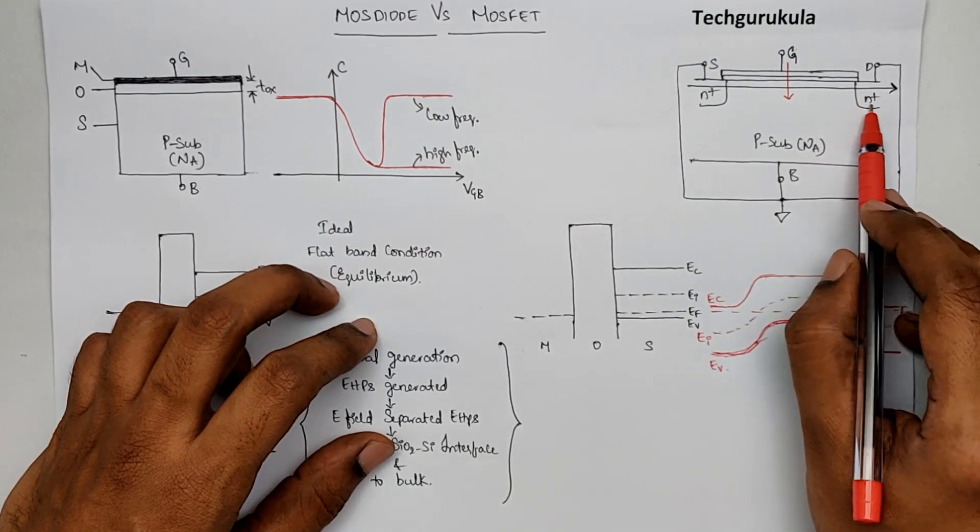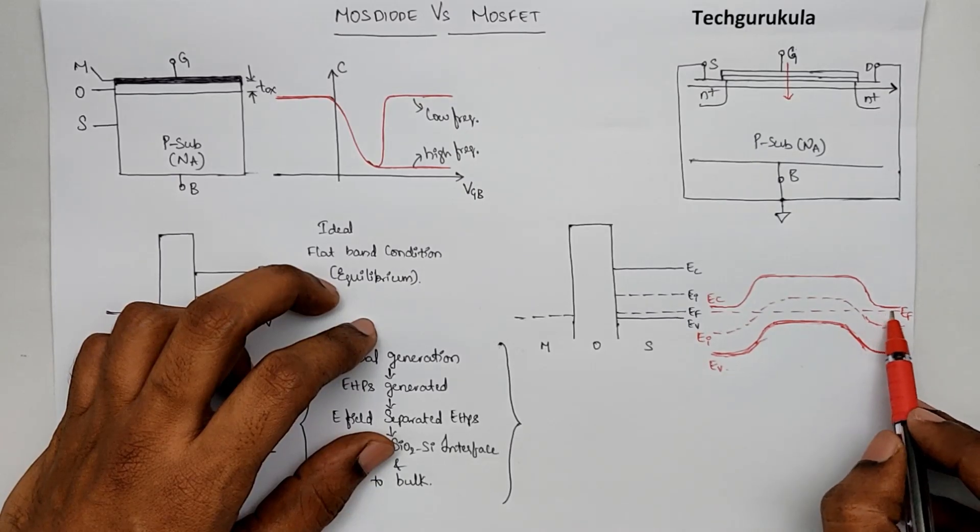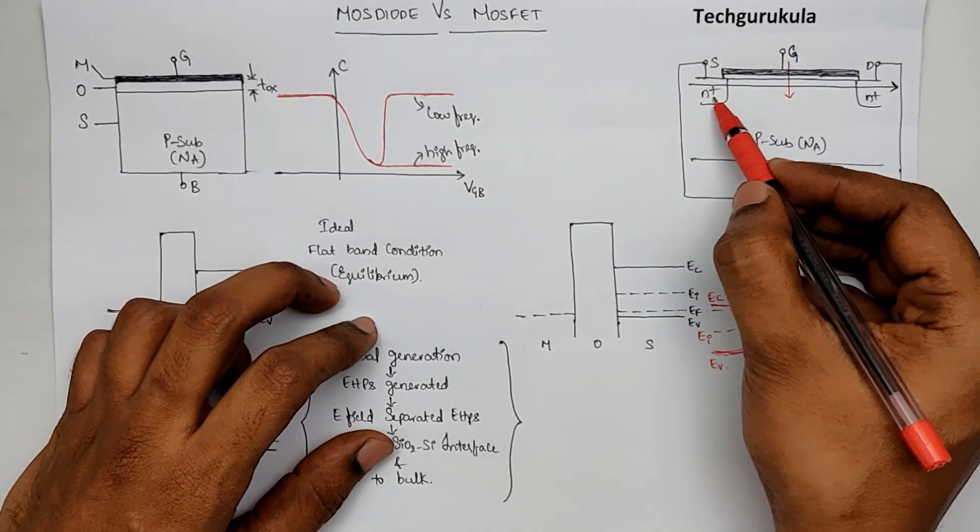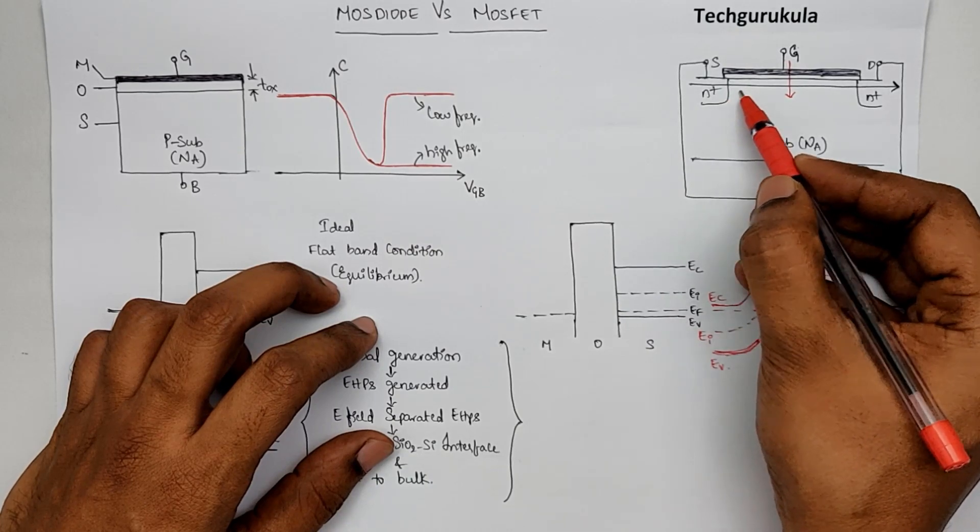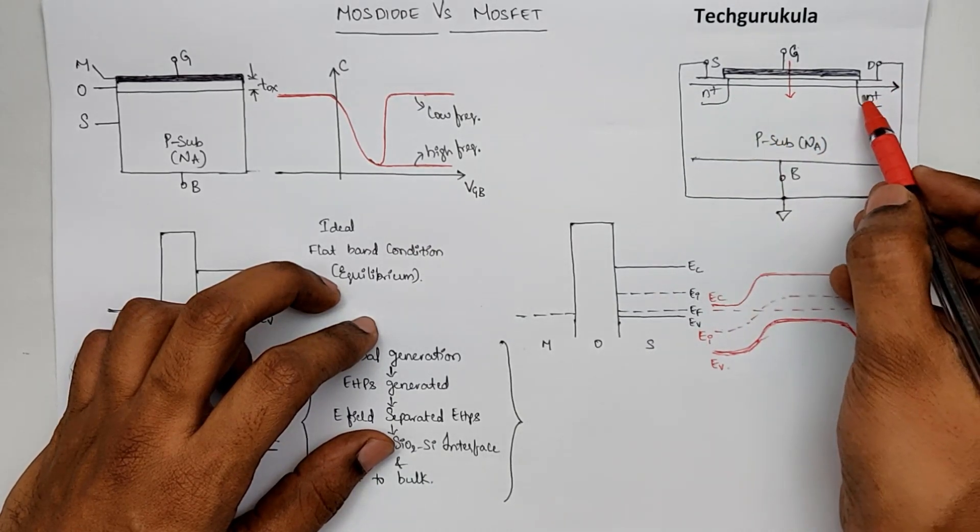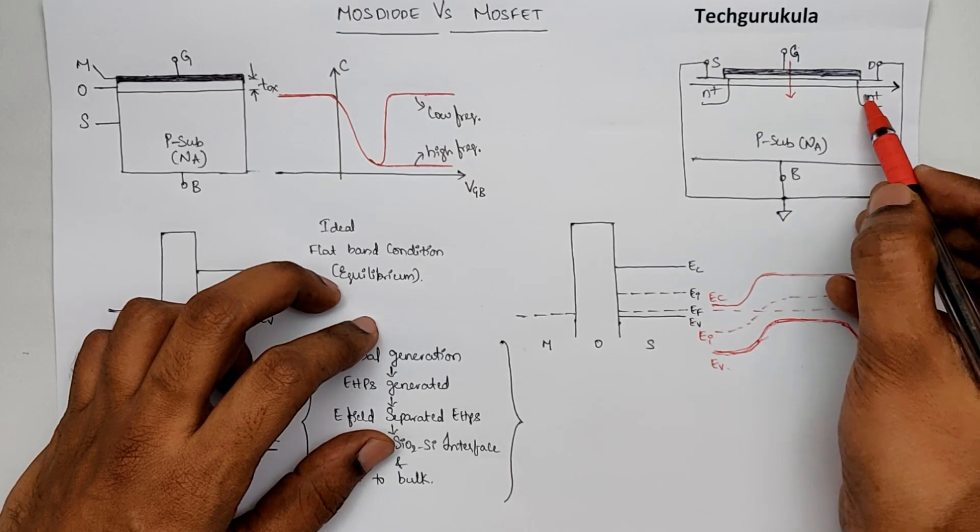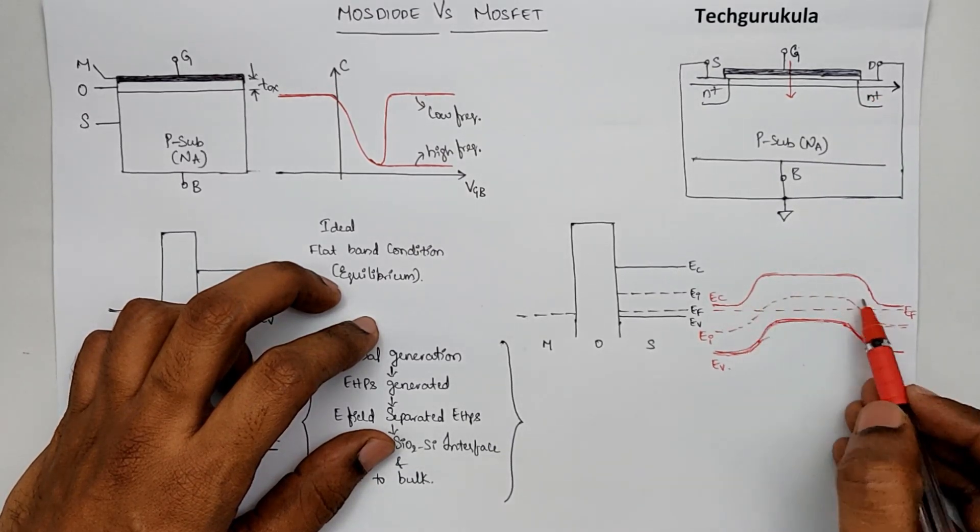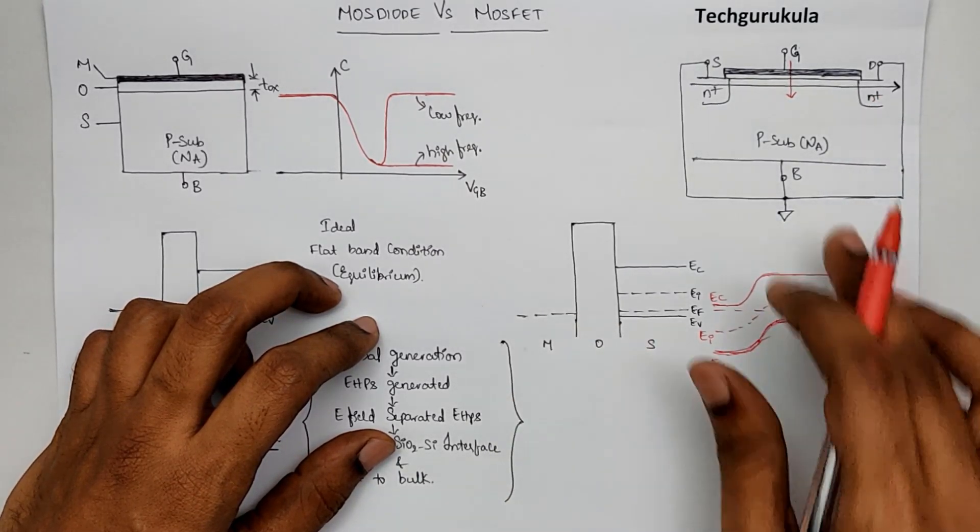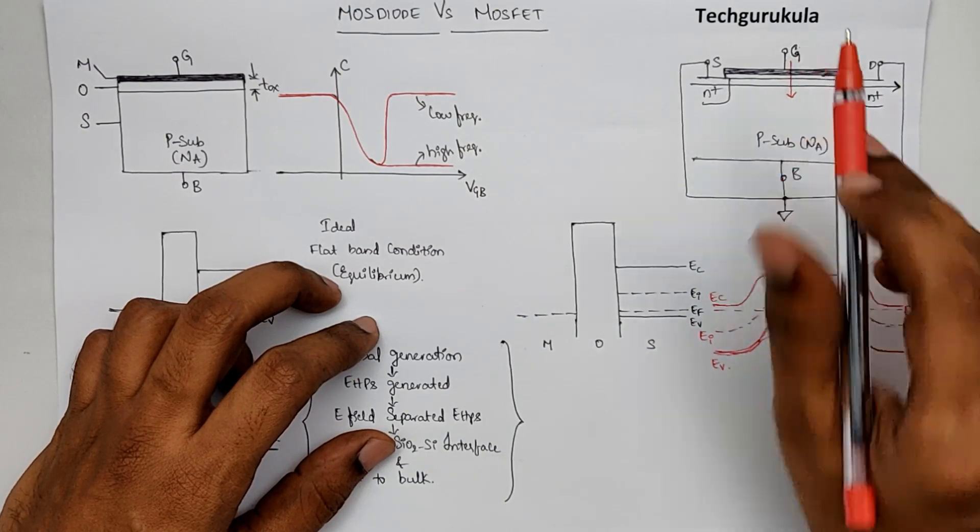And when we go to the drain side, this is n plus. So the EF is close to EC. And of course, we see a barrier from n plus to P side, which is expected, that is a P-n junction. And even here also, drain to the substrate. That's why we have these barriers. This is under equilibrium when Vg is also 0.